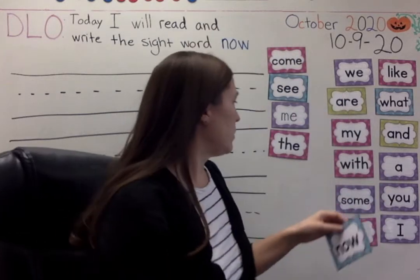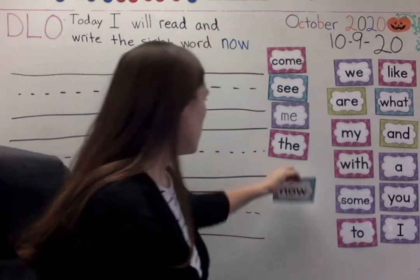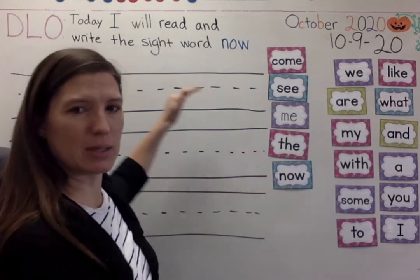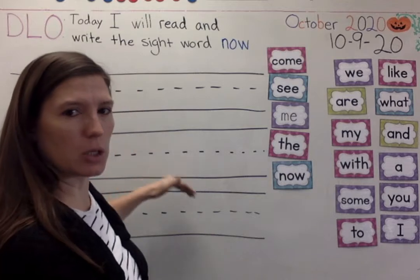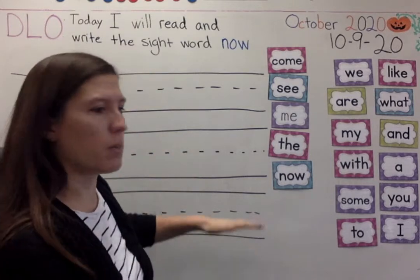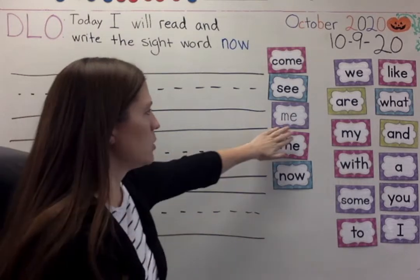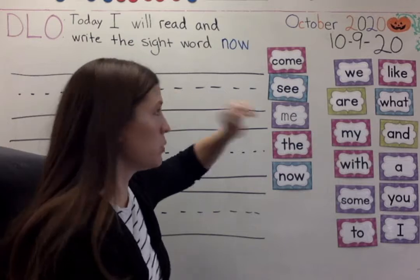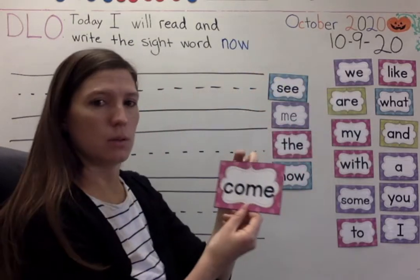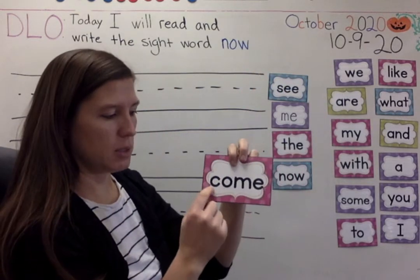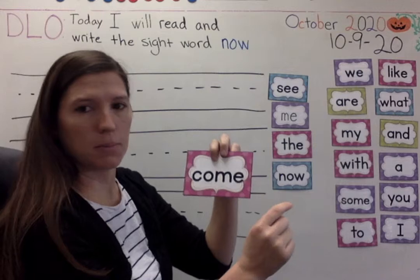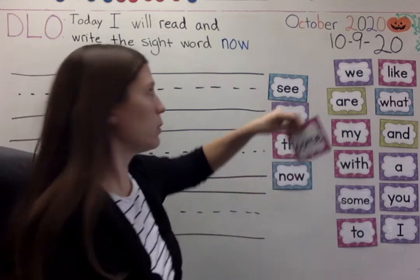I put the words we're going to use here today because my sentence is going to be a little longer, so I put three lines. The words we're going to use today are 'come' — C-O-M-E, come — and 'play ball with me.'